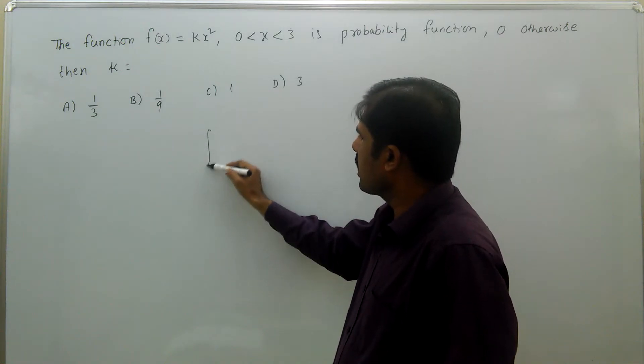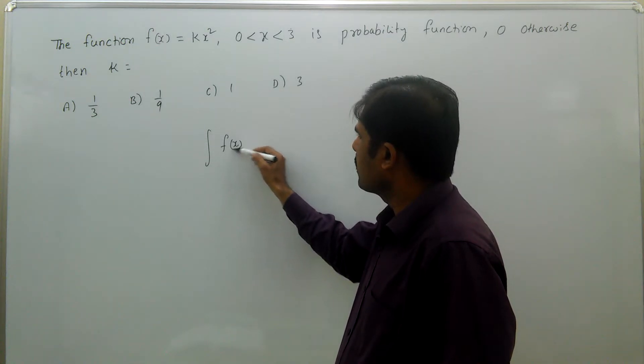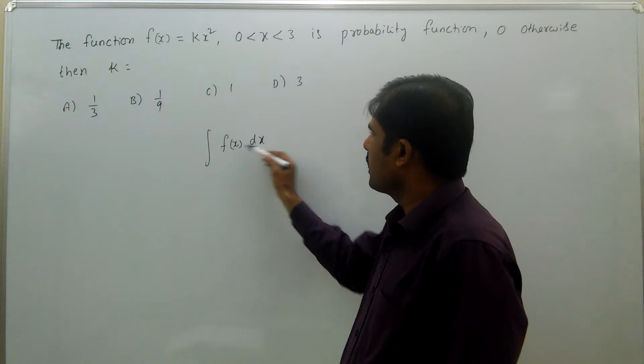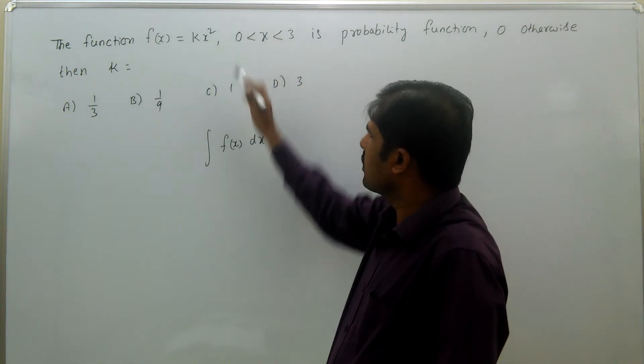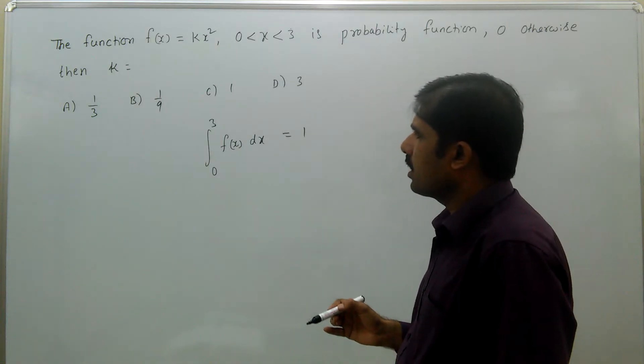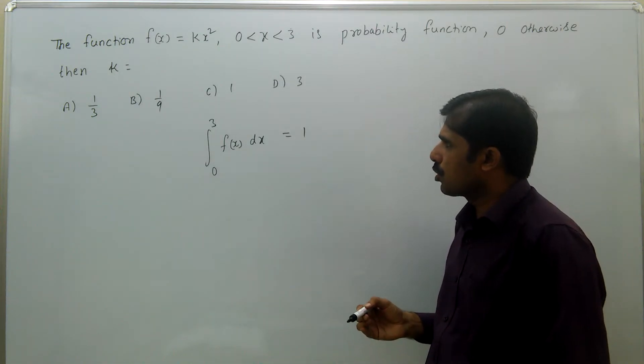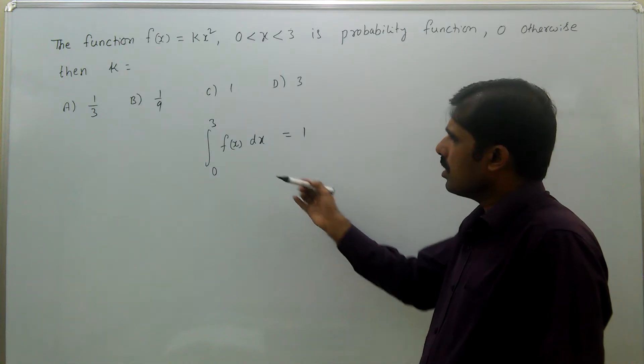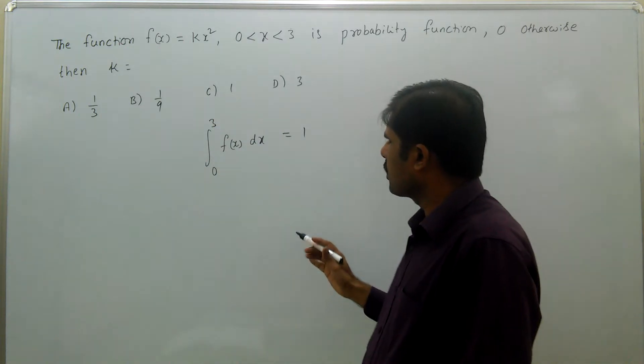So any function, integral f(x)dx within that range, that is 0 to 3, this must be 1, because total probability of any random variable should be 1. So integral from 0 to 3 of f(x)dx equal to 1.